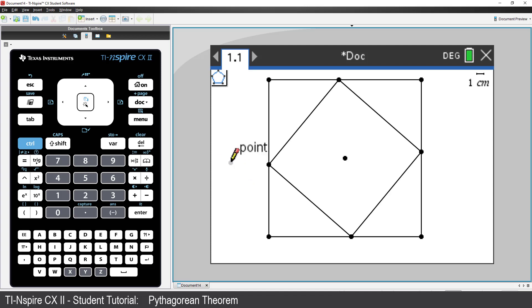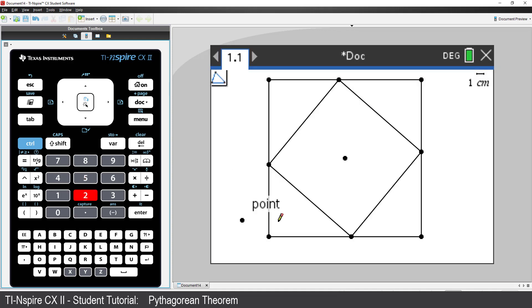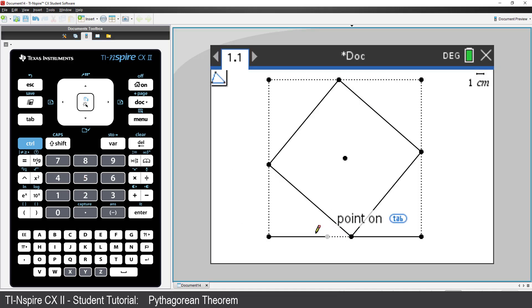Our construction now includes 2 squares and the appearance of 4 triangles. But we need to add them as triangles. We'll use the Shapes tool, select Triangle, and then click on each of the vertices for our triangle. Now go ahead and draw the remaining 3 triangles.